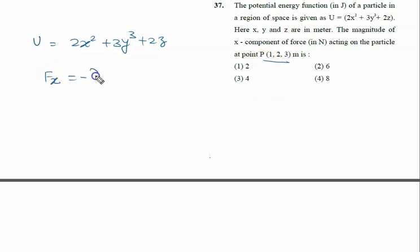Fx is known as minus dU by dx. So we differentiate with respect to x. It is minus d by dx of 2x squared. 2 is constant, x squared differentiation is 2x, so it is minus 4x.